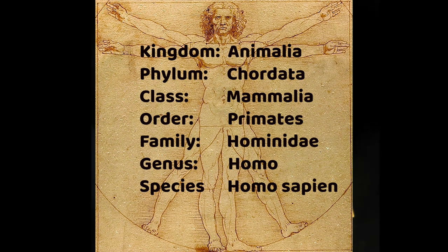Let's explore how this classification system works. As an example, let's look at how our species, human beings, are classified within this system. First, kingdom — we are animals.